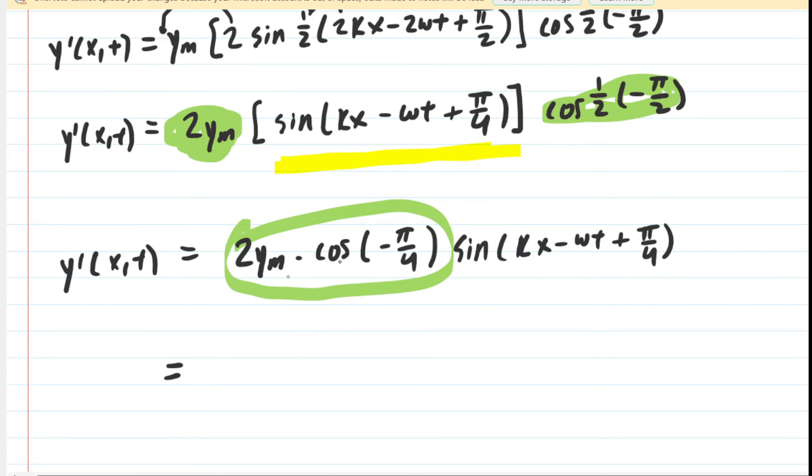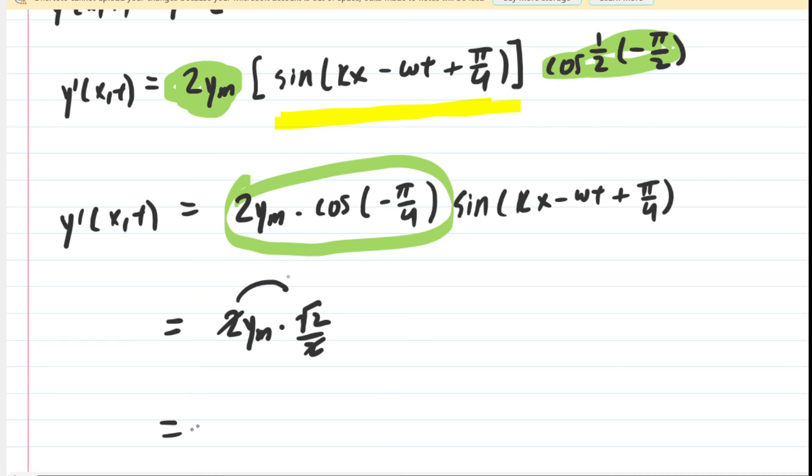We'll calculate the cosine of negative π/4. The cosine of negative π/4 is √2/2. We're going to have 2y_m multiplied by √2/2. But if you multiply the 2 by √2/2, then the 2s cancel and we actually get √2, and then that's multiplied by y_m.